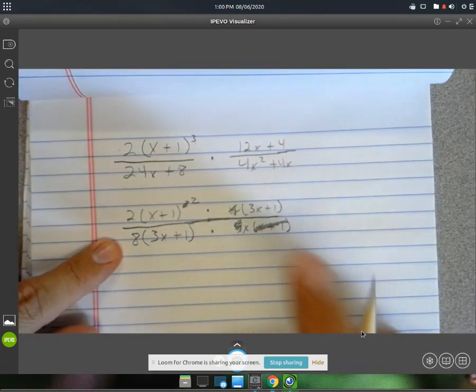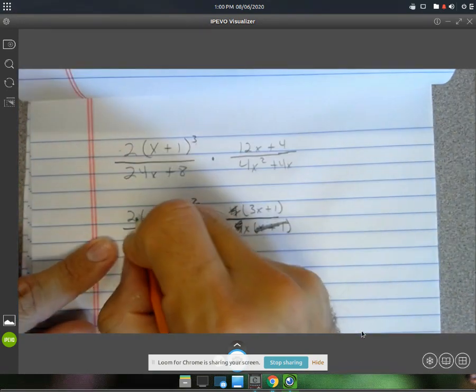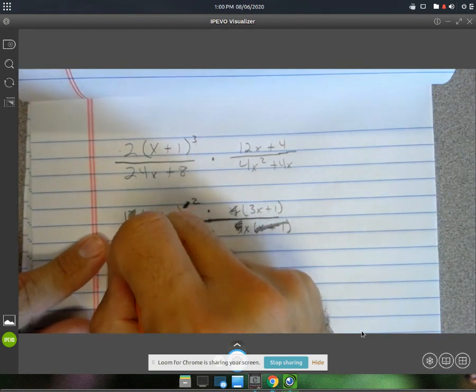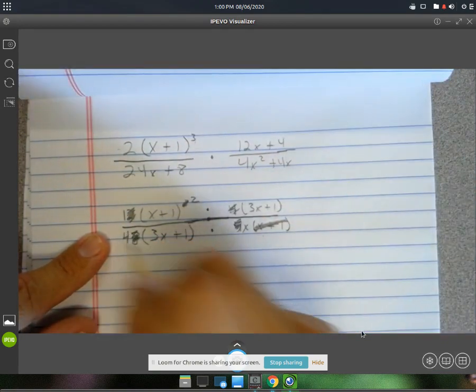Let's see. That 2 and that 8, you can divide them both by 2. This will become a 1, or not at all. And this will become a 4.